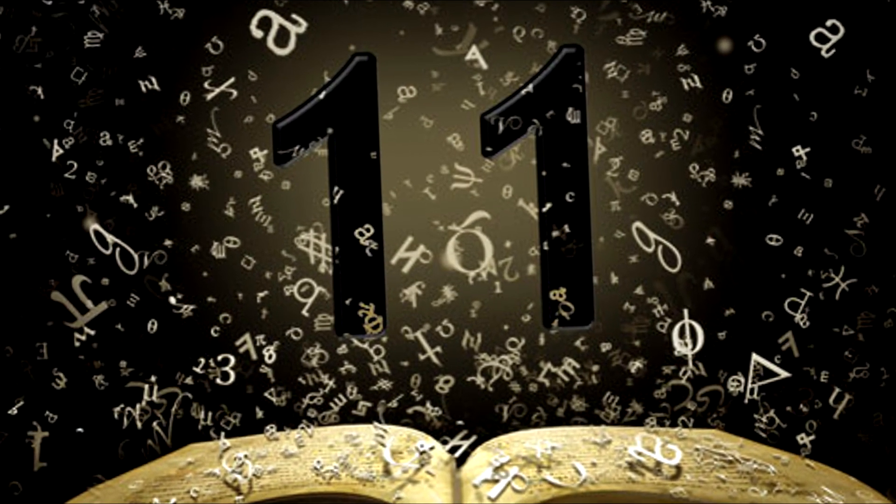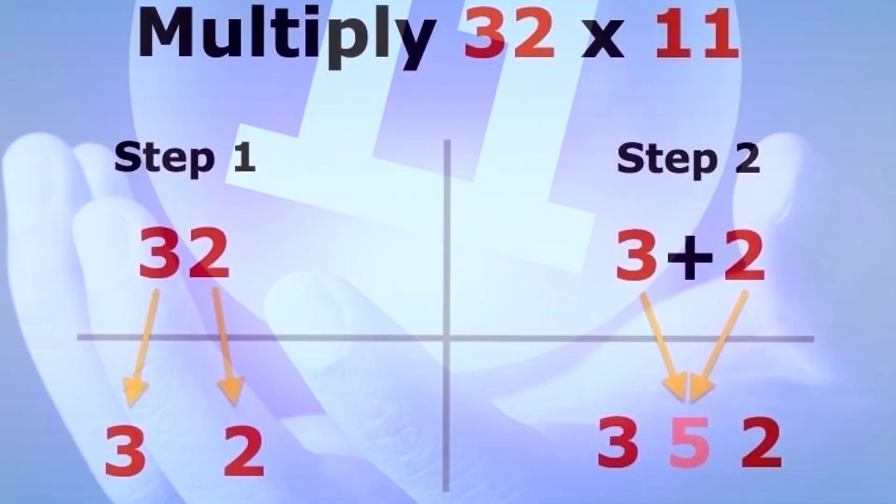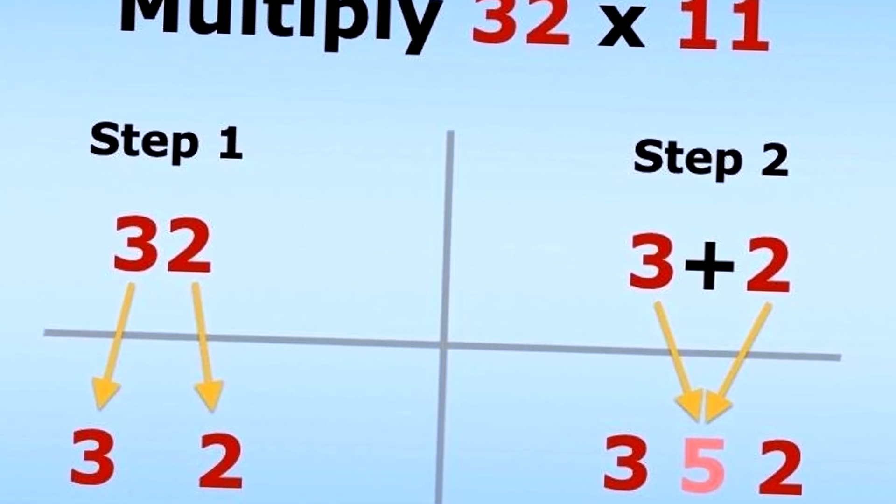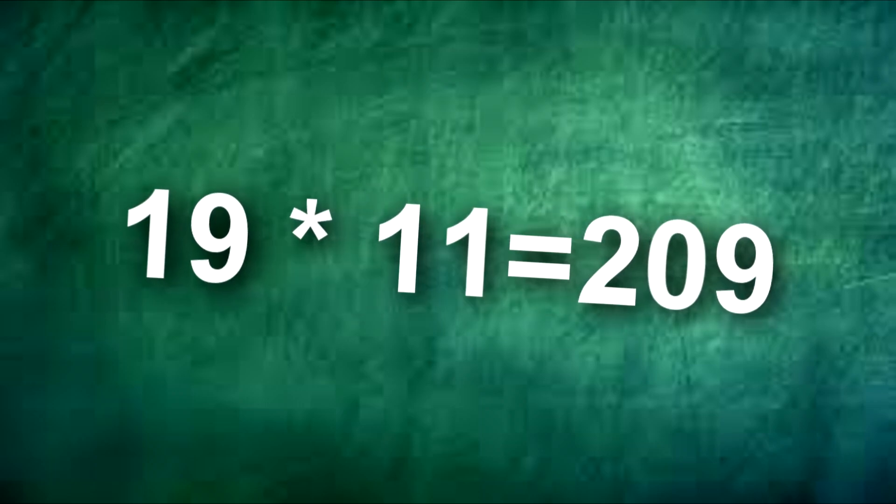Multiplying by 11. Eleven seems like a tricky number to multiply, but it's very simple. To multiply two-digit numbers by 11, add the two digits together and then place the sum between them. To multiply 22 by 11, you would add 2 plus 2 and then insert the sum between the 2 and 2, creating 242. 23 would be 253. 24 would be 264, etc. If the sum is greater than 10, carry the 1 to the first number, so 19 by 11 would equal 209.